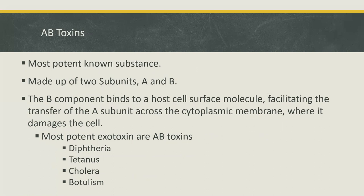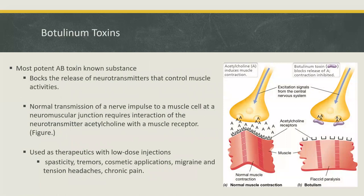AB toxins are the most potent substances known because they interfere with the function of the host cell. AB toxins are made of two subunits, A and B. The B subunit facilitates the transfer of the A component — the active portion — across the cytoplasmic membrane by binding to the surface molecule of the host cell. Some of the best known and most potent AB exotoxins include those expressed in diphtheria, anthrax, botulism, and cholera.